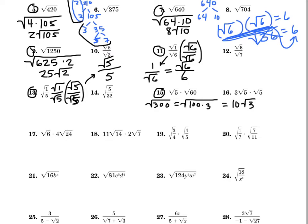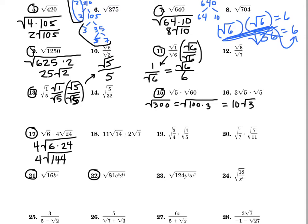Let's do 17, 21, and 22 — we have to have some with variables. For problem 17, let's multiply 6 and 24. You might remember this from the warm-up. 6 times 24 is 144 — sometimes multiplying the radicands gives you a perfect square. So the square root of 144 is 12. Problem 21: square root of 16 is 4, and the square root of b to the 4th is b squared — you cut that exponent in half, which is taking the square root of that variable expression.